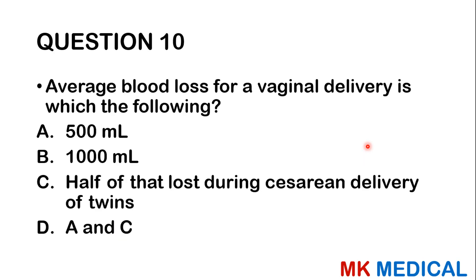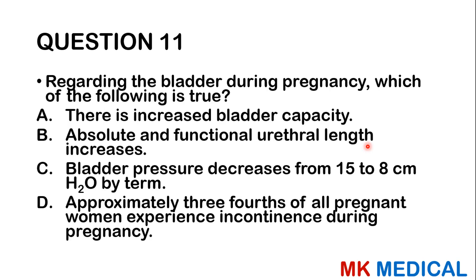Question ten: Average blood loss for a vaginal delivery is which of the following? A, 500 mls; B, 1,000 mls; C, half of that lost during cesarean delivery of twins; D, A and C. The answer is 500 mls. Remember, when you have more than this loss, you term it as a postpartum hemorrhage.